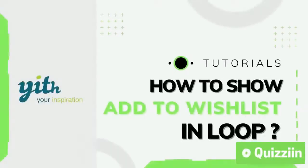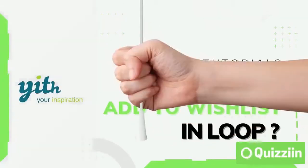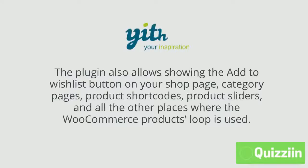How to show Add to Wishlist in Loop. The plugin also allows showing the Add to Wishlist button on your shop page, category pages, product shortcodes, product sliders, and all the other places where the WooCommerce products loop is used.